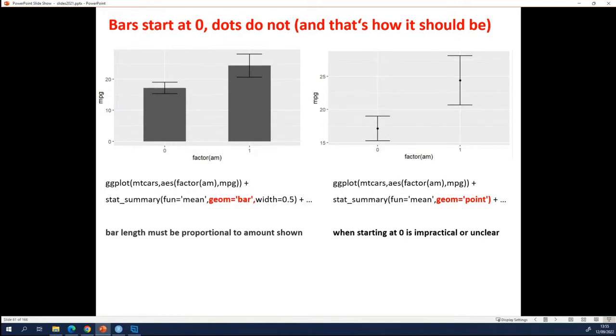So what is the difference between the bar charts and the dot plots? Just one word basically. You see that everything is the same here, except for this here. So this stat summary is a function and it has arguments. And one of the arguments is the geom argument, and that specifies what kind of plot you want to make. Bar will make a bar chart and point will make a dot plot. So that's the only difference here.